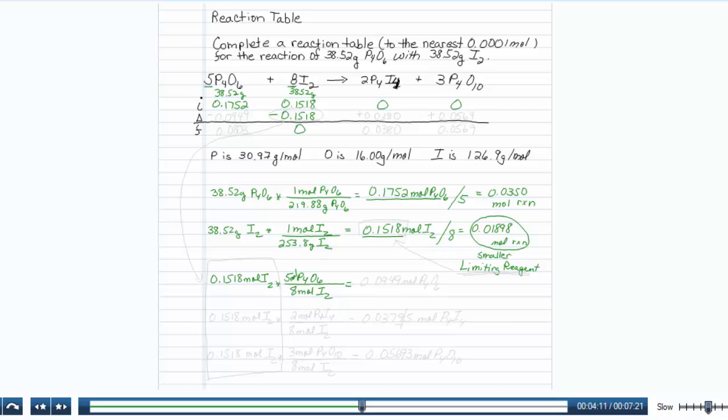Let me write in the word mole. There we go. So this gives me a value of 0.0949 moles of P4O6 that I use. I'm going to put a negative sign in front of it because it's reacting, 0.0949. Now I just have to do the math. 0.1752 minus 0.0949 gives me 0.0803 moles left over.